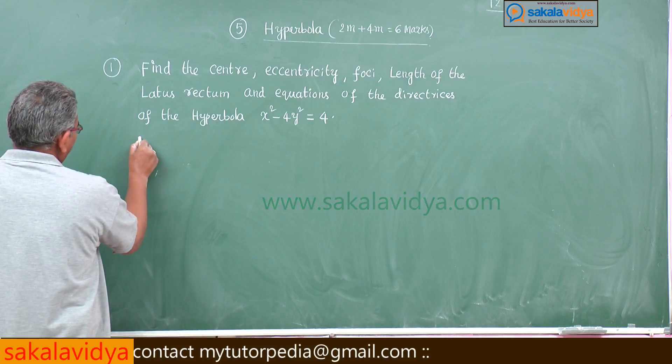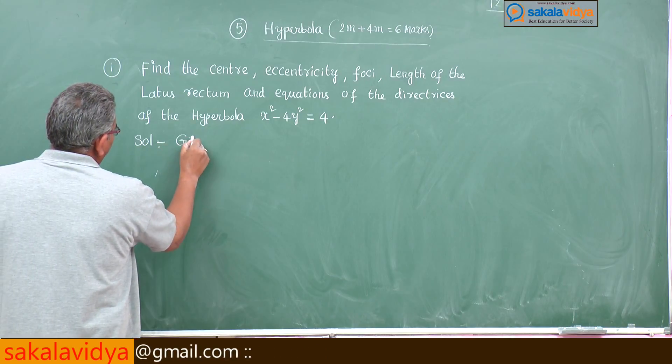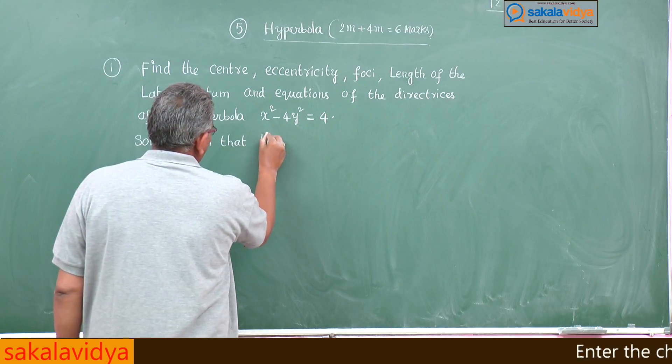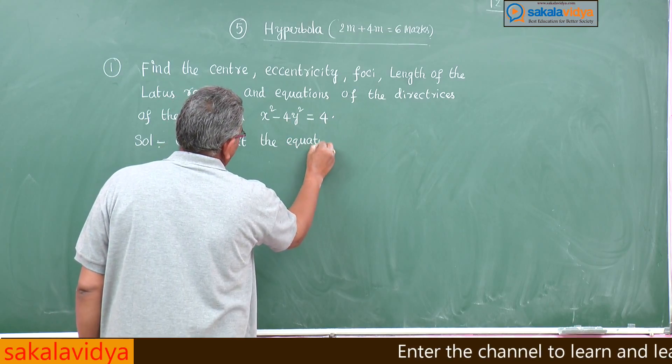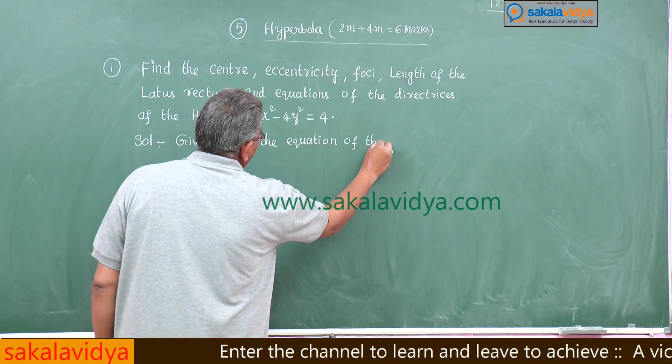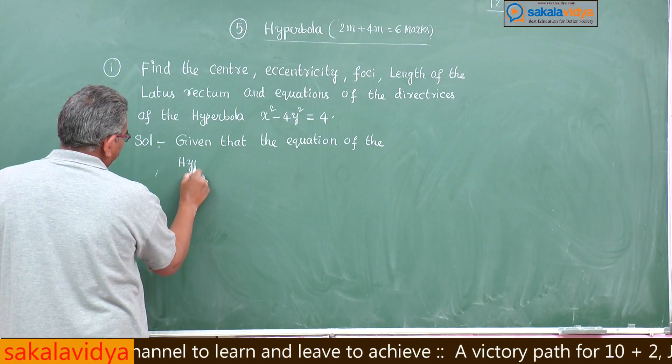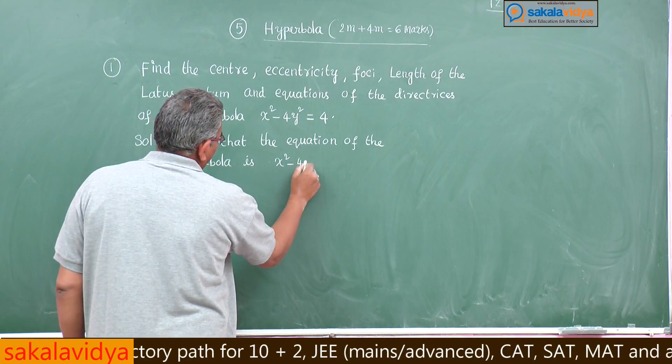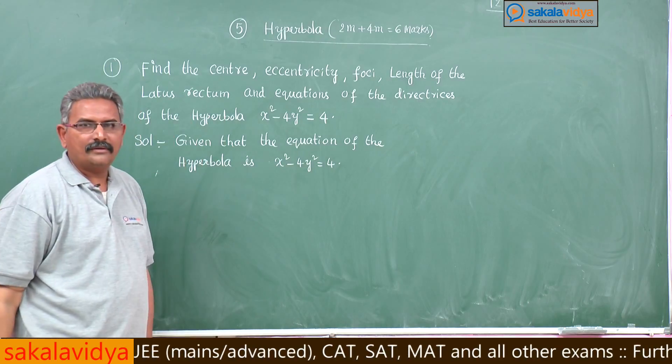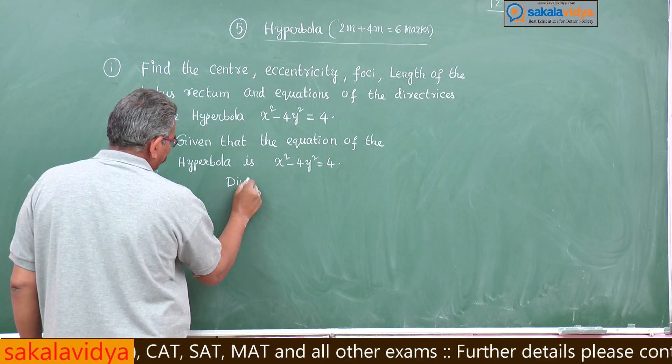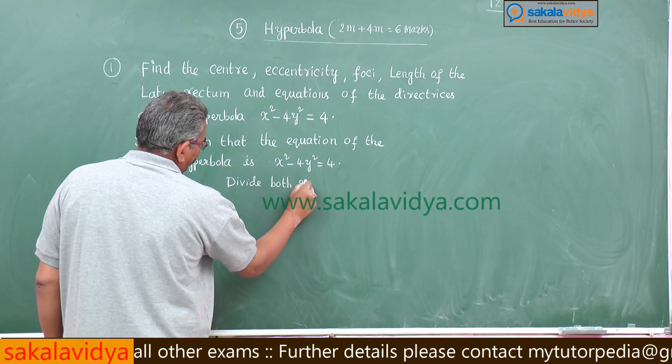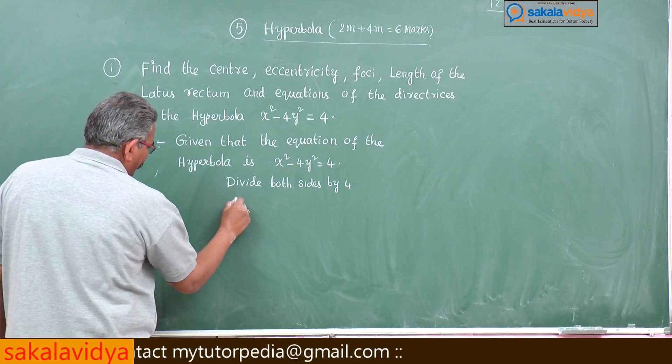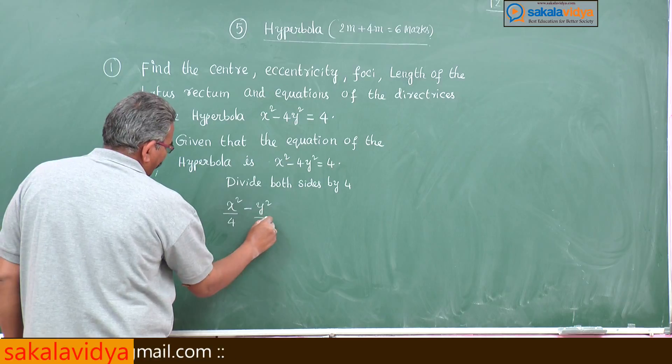Now, given that the equation of the hyperbola is x square minus 4y square is equal to 4. Divide both sides by 4, we get x square by 4 minus y square by 1 is equal to 1.